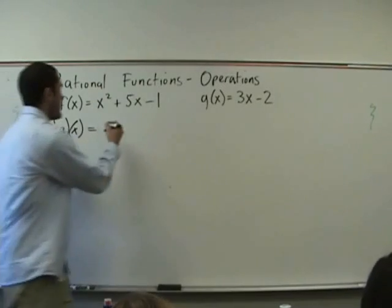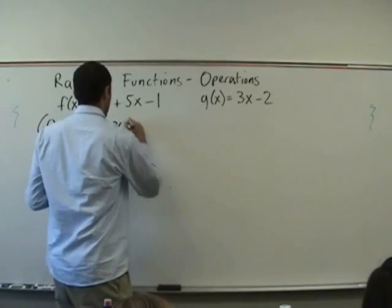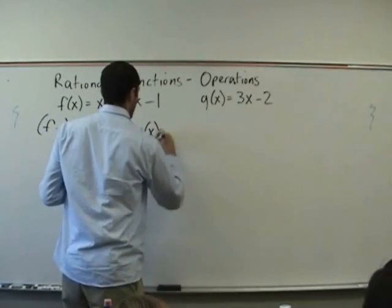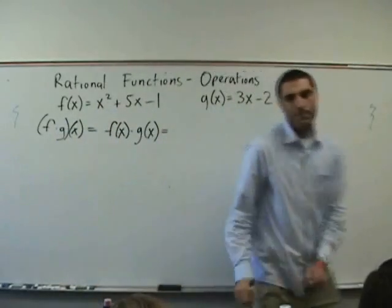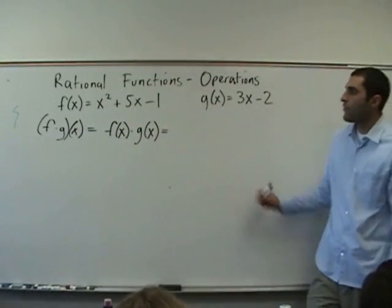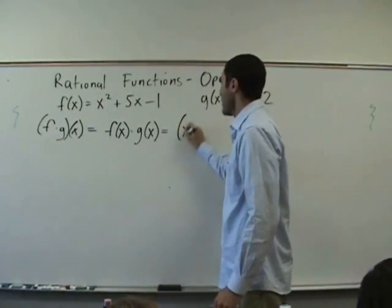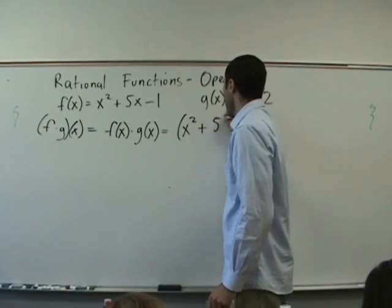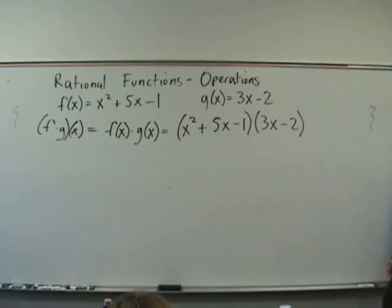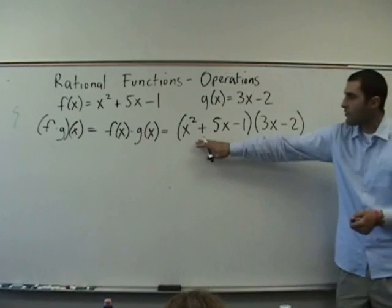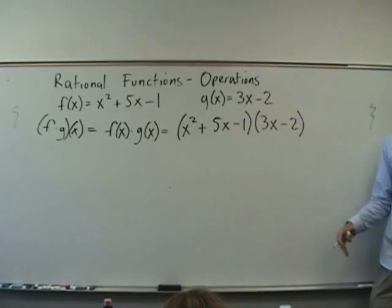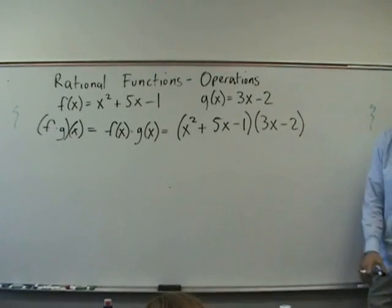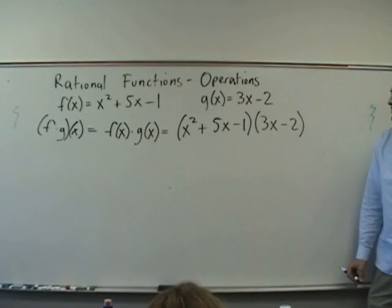Okay. f times g of x is f of x times g of x. Wow. Writing both? Writing both. x squared plus 5x minus 1. Oh, it's just FOIL. Yeah, FOIL is for two binomials. These are polynomials. But it's the same concept. It's distributive property. It's just FOIL. Going crazy.